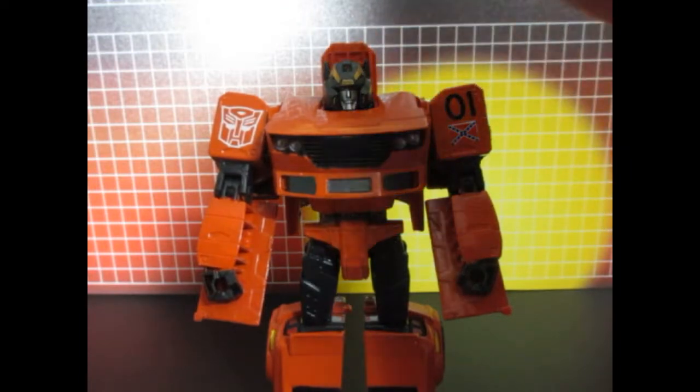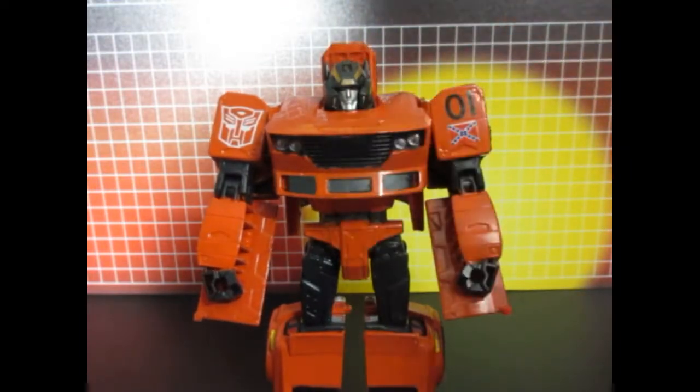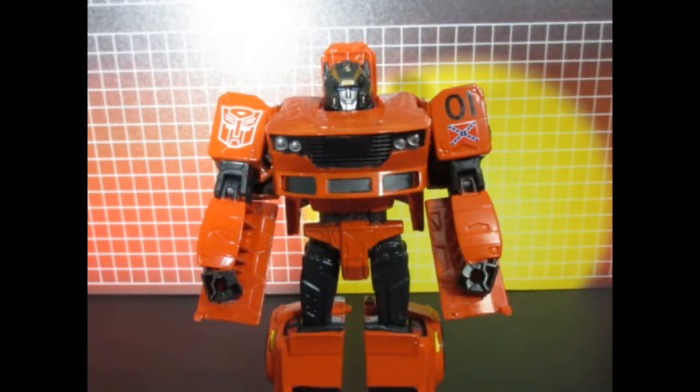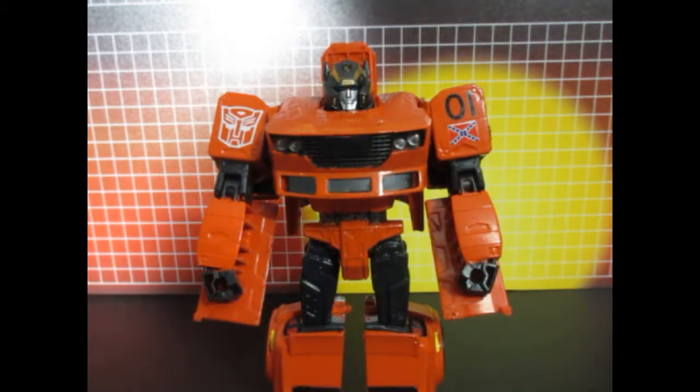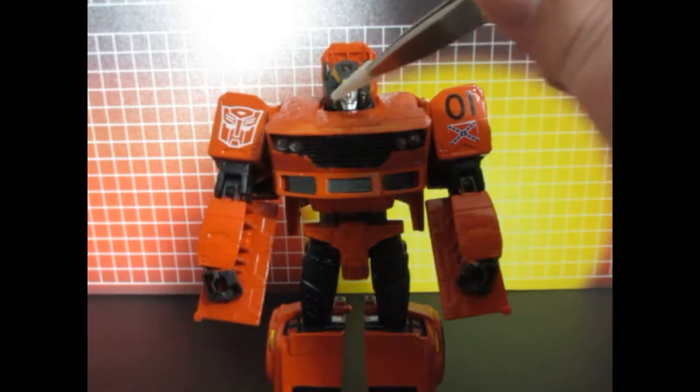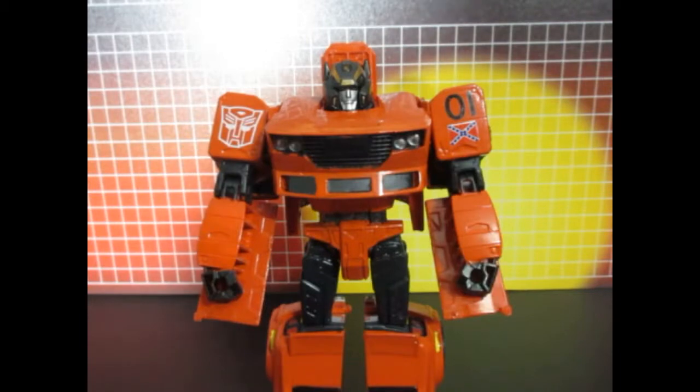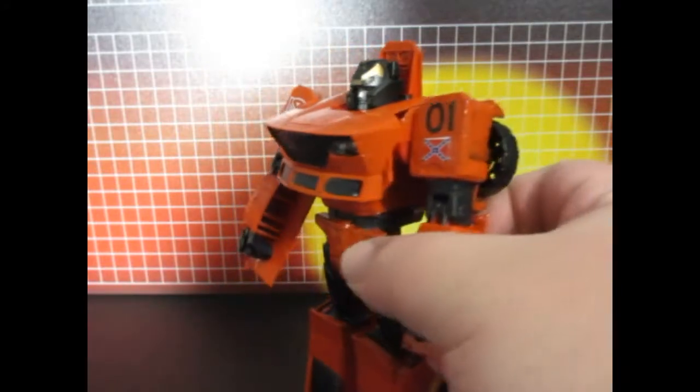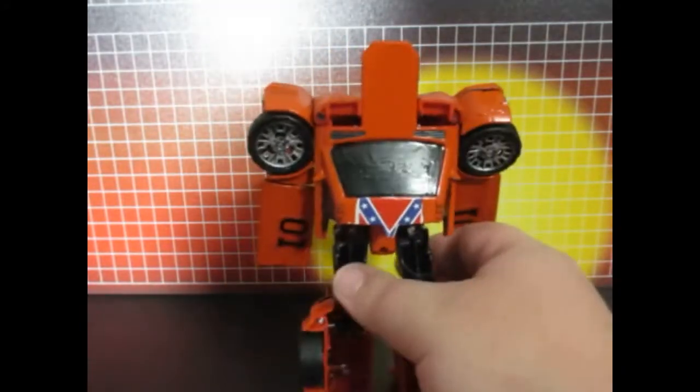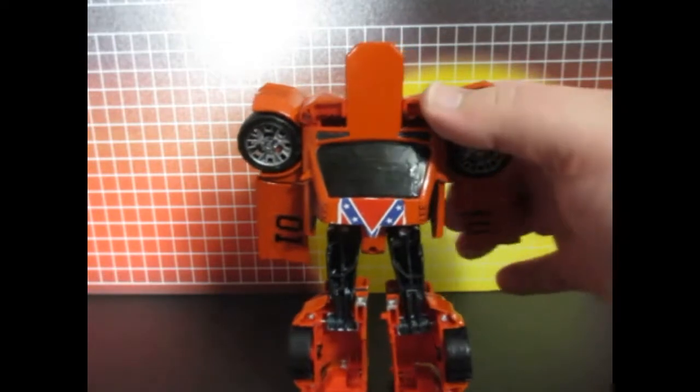Now, here and here are the gold head labels from the Power of the Primes Rodimus Prime Toy Hasbro set. And right there and there and here and here is gold paint. And on the back, this is how it looks.